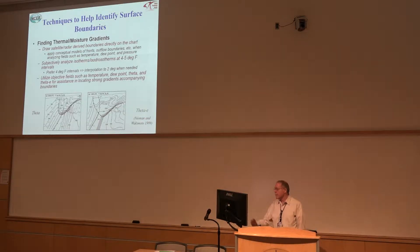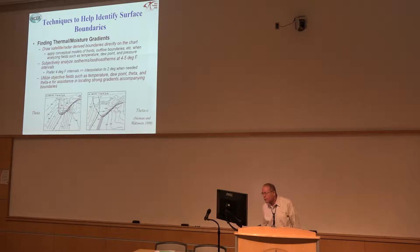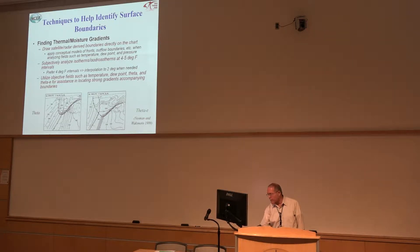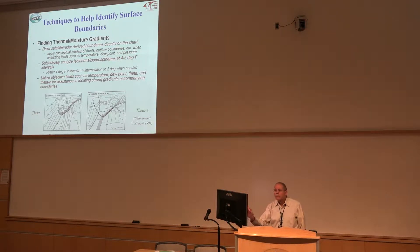Here's an example from an old paper by Neiman and Wakamoto looking at the theta field on the left and the theta-e field on the right. If we look on the right, right through here it doesn't have a strong thermal character, but it certainly has a strong moisture discontinuity — this is a dry line in through here. But then you can also see in the theta field where the frontal boundary is probably occurring. So this can help us.